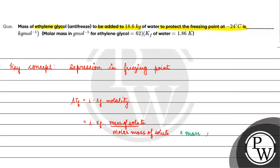For ethylene glycol, i = 1, Kf = 1.86 Kelvin kilogram per mole. Mass of solute we have to take as x. So it's x divided by 62 into mass of solvent 18.6 kilogram.